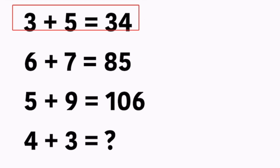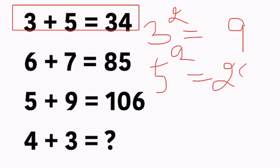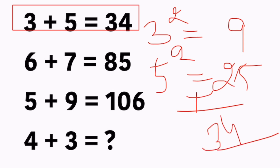First, look at the first statement: 3 plus 5 equals 34. Take the first number, 3, and square it: 3 squared equals 9. Take the second number, 5, and square it: 5 squared equals 25. Last step: add both numbers — 9 plus 25 equals 34. And 34 appears on screen. Now apply the same formula to the next statement.